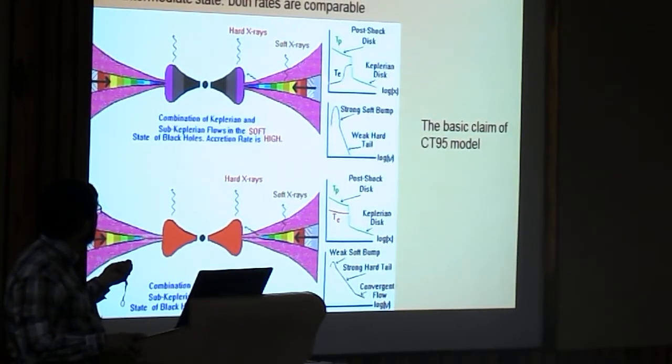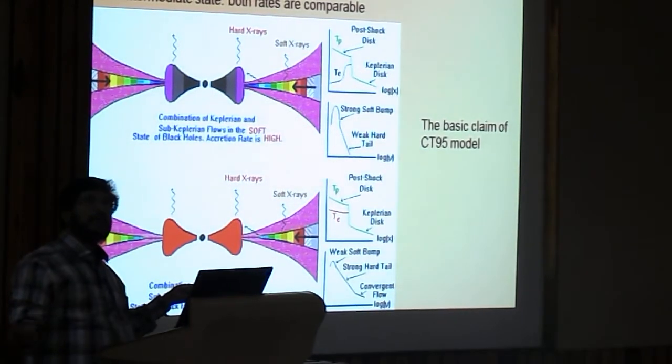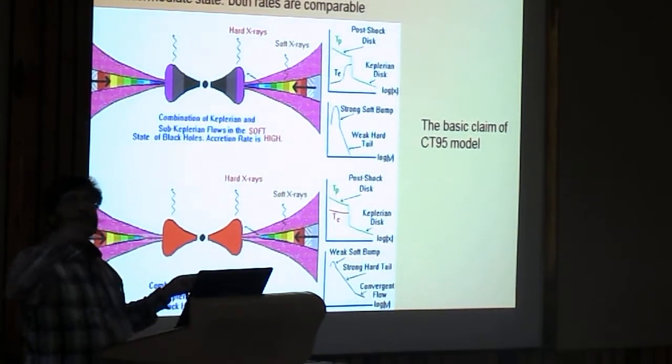And this post shock region puffs up like a thick disk and enters into black hole. So you now have grand unification of the Keplerian disk on the equatorial plane, Bondi flow, centrifugal barrier, thick disk, and jets and outflow and everything. So when you start with the general equation you do get the general solution there is nothing wrong.